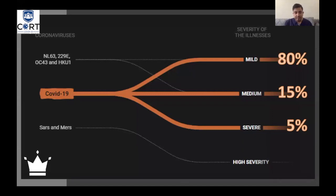Most COVID-19 patients — 80% — will be asymptomatic or experience only mild symptoms. Fifteen percent will have moderate symptoms requiring hospital admission, such as shortness of breath, hypoxia, or pneumonia. Five percent of patients will be severe or critical and require ICU admission.